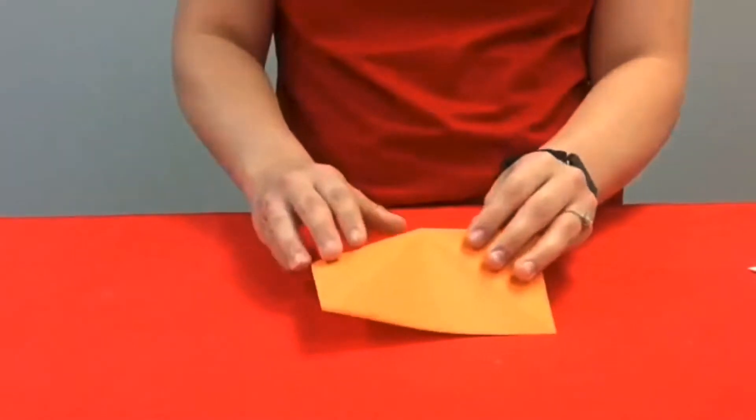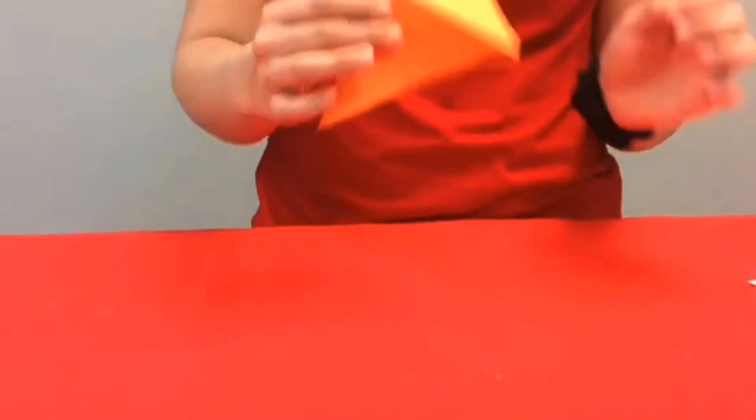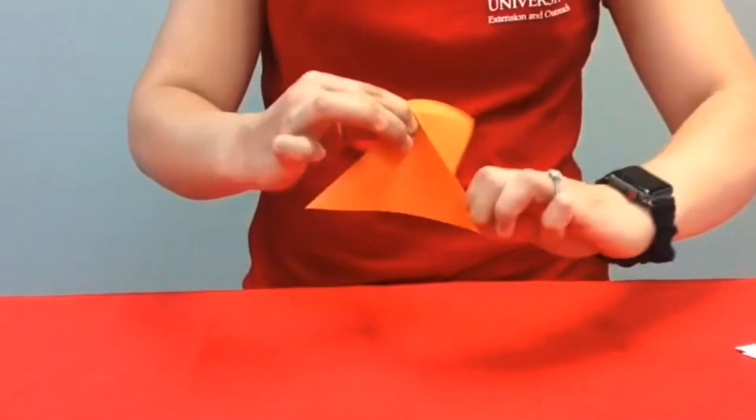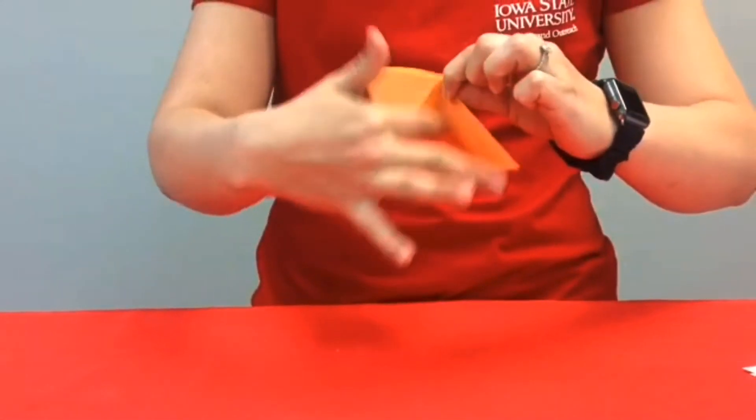Okay so now you are to the point where you fold in the triangles and this may take a couple tries. So you're going to have a crease there and have a crease here. You want this going inside.